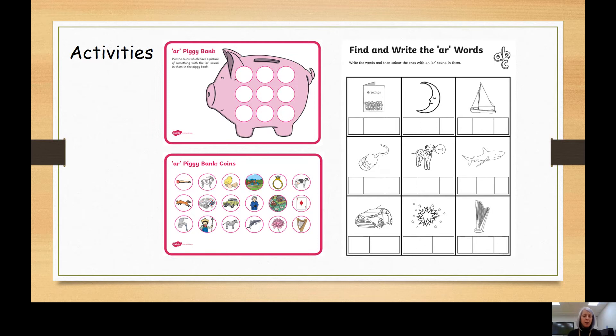Where you have an AR piggy bank baseboard and then you've got some coins, some AR coins with pictures on. Now some of those pictures do not have the digraph AR, so you will need to sort them out. See if you can.